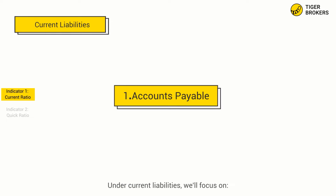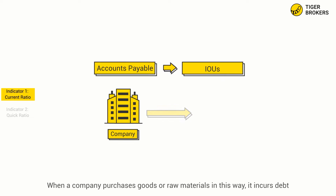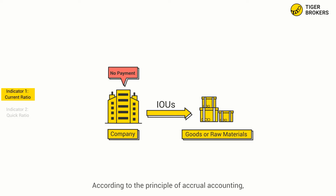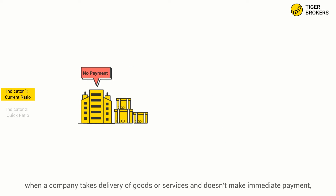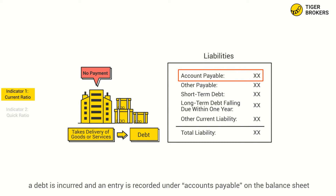Under current liabilities, we'll focus on: 1. Accounts Payable. Accounts payable are essentially IOUs. When a company purchases goods or raw materials in this way, it incurs debts. According to the principle of accrual accounting, when a company takes delivery of goods or services and doesn't make immediate payment, a debt is incurred, and an entry is recorded under Accounts Payable on the balance sheet.